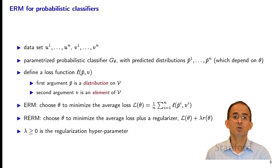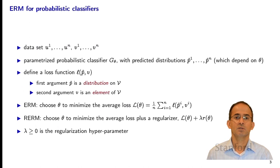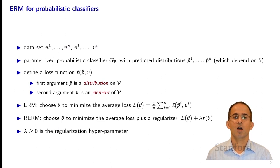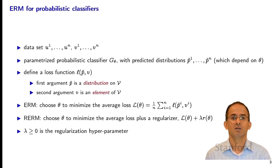We're going to look at the average loss: 1/n times the sum from i=1 to n of the loss of p-hat i and v_i. We're going to choose theta to minimize the average loss. If we're doing regularized ERM, then we'll have a regularization function r of theta, and we'll minimize the average loss plus lambda times r of theta.